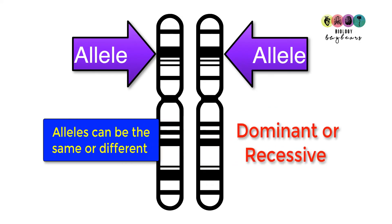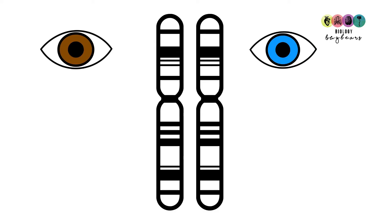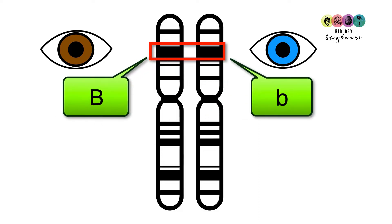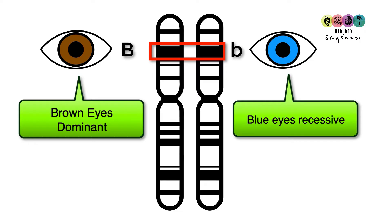An allele can be the same or different, and can be termed dominant or recessive. Let's use the example of eye colour to explain dominance and recessiveness. Looking at this pair of chromosomes, there is one gene coding for eye colour, and each chromosome has one version of that gene — one allele. The one on the left has the allele for brown eyes and the one on the right has the allele for blue eyes. It all depends on which allele is dominant: brown eyes are dominant over blue eyes.